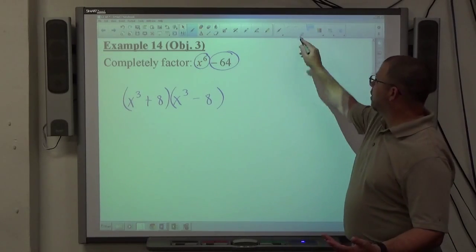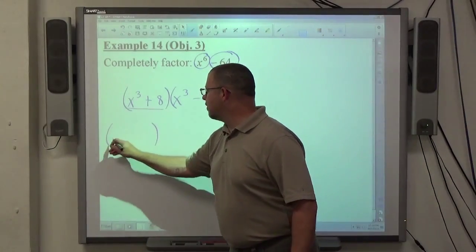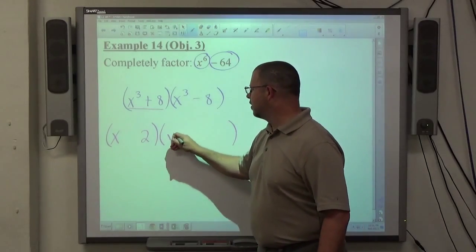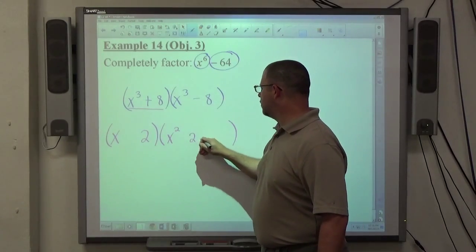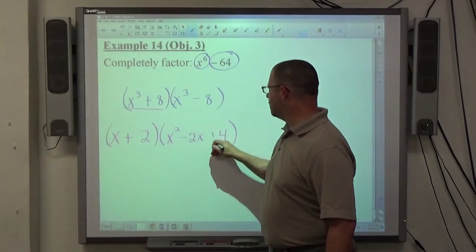And then we're at the same point where we were last problem, right? We've got X cubed plus 8, which is the sum of cubes. The cube root of X cubed is X, and the cube root of 8 is 2. Second parentheses is square of the first, multiply the two together, square of the second. The signs are same, opposite plus.